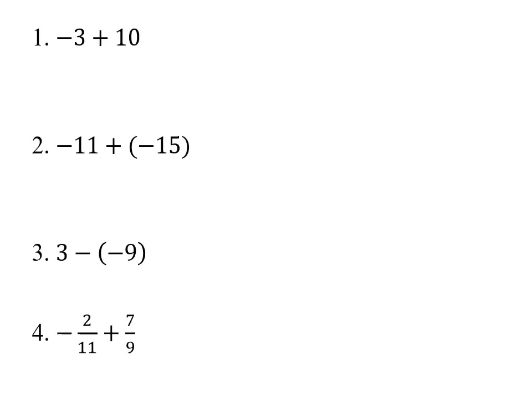Let's do some examples with whole real numbers and fractions. The first one says negative three plus ten. Those are two numbers with opposite signs — ten is positive, three is negative. Since they are opposite signs, we subtract the two numbers: ten minus three gives you seven. The ten is bigger and is positive, so the answer is positive seven. We don't usually write the positive sign in front — it's understood to be positive if we don't write it.